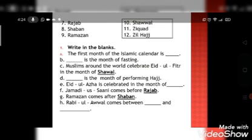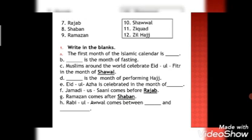Muharram. Dash is the month of fasting, which month we keep the day? Ramadan. The third part is Muslims around the world celebrate Eid ul Fitr in the month of Shawwal, which month we celebrate our Eid ul Fitr? In Shawwal's month. D part is dash is the month of performing Hajj. Which month we perform? Zilhajj.